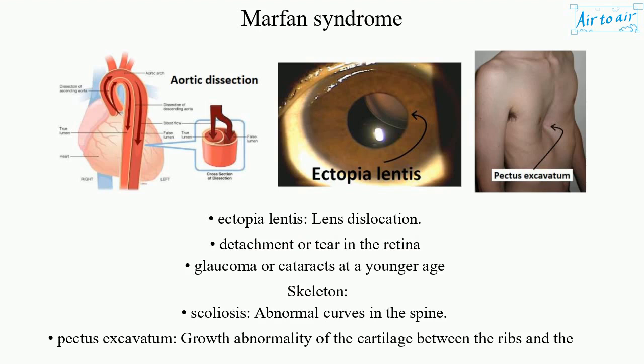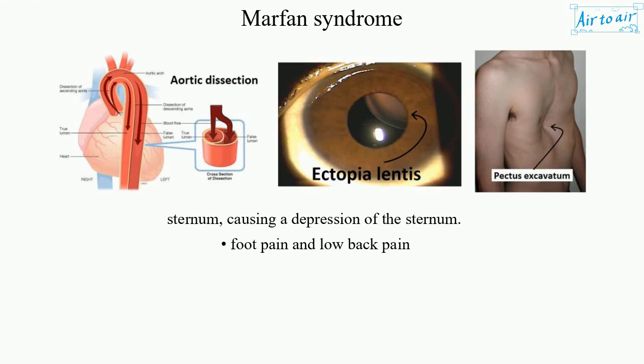Skeleton complications: scoliosis — abnormal curves in the spine. Pectus excavatum: growth abnormality of the cartilage between the ribs and the sternum, causing a depression of the sternum. Foot pain and low back pain.